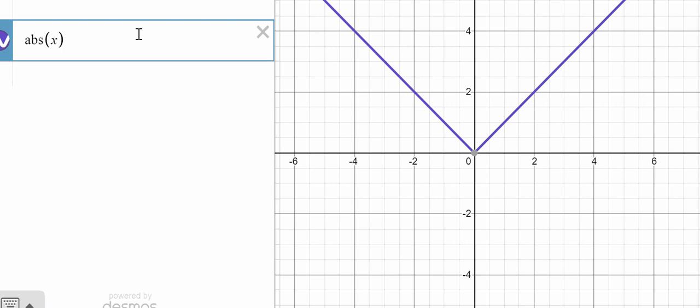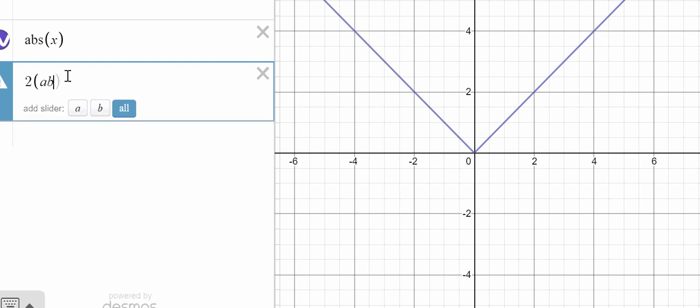So here, we see that this is what our parent function for an absolute value looks like. So now, we want to graph our g of x, which is 2 times the absolute value of x.